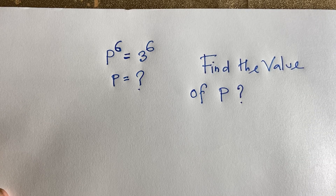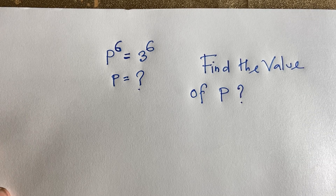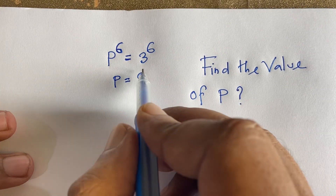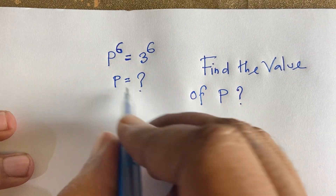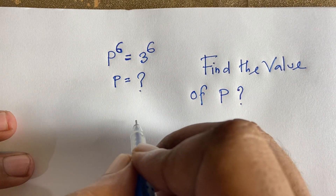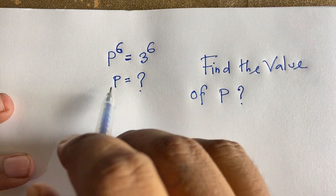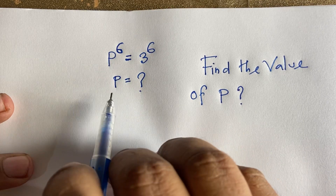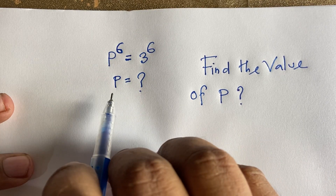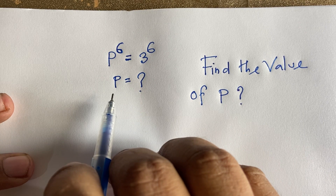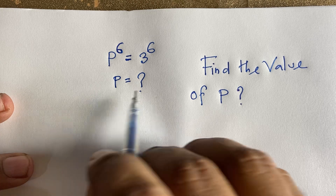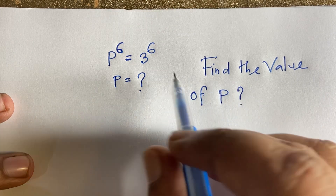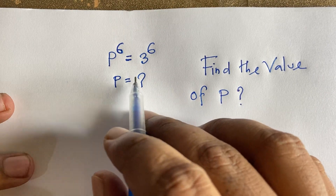Hello everyone. In this video we solve this interesting exponential equation: p to the power 6 is equal to 3 to the power 6. Since the exponents are the same, we can say p is equal to 3. But we will find out all values of p — the complete solution.